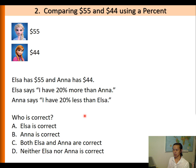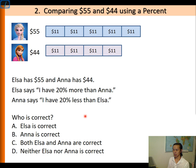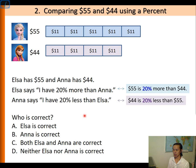Let's represent using a strip diagram. Elsa has 5 equal parts of $11, whereas Anna only has 4 parts. Now in order to decide who is correct, let's rephrase it. What Elsa is essentially saying is that $55 is 20% more than $44, whereas Anna is saying $44 is 20% less than $55.